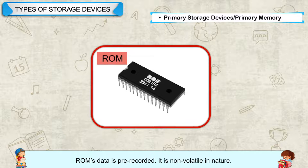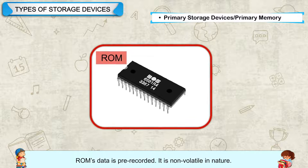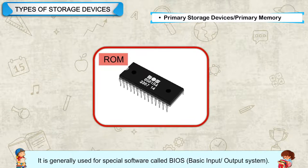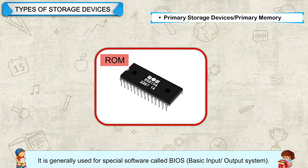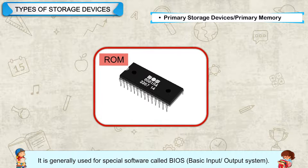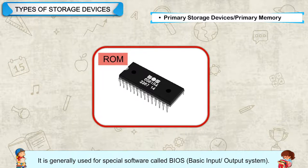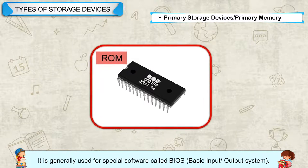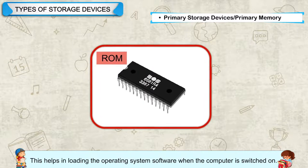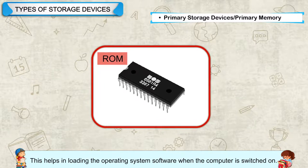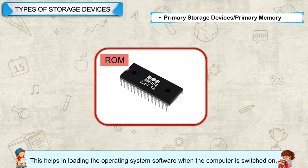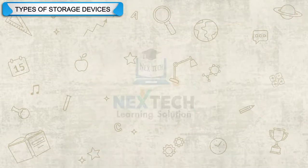Read-only Memory (ROM): ROM's data is pre-recorded. It is non-volatile in nature. It is generally used for special software called BIOS — Basic Input Output System — which helps in loading the operating system software when the computer is switched on.